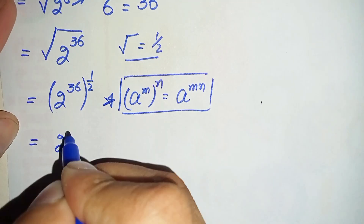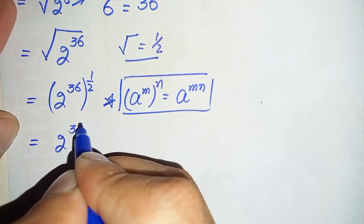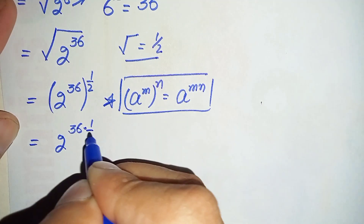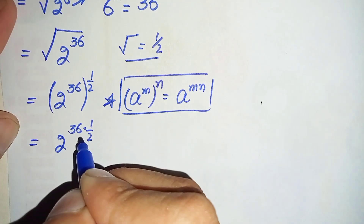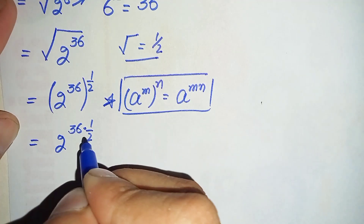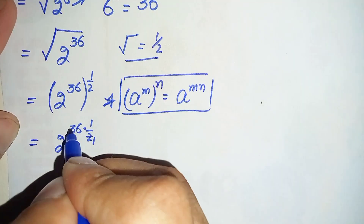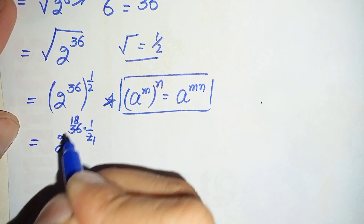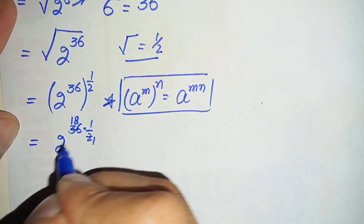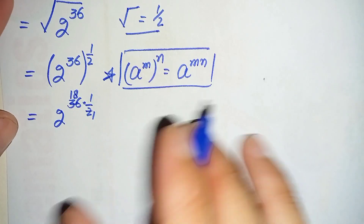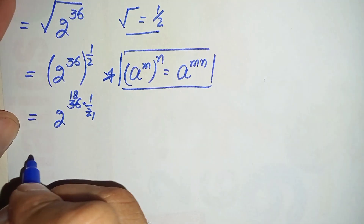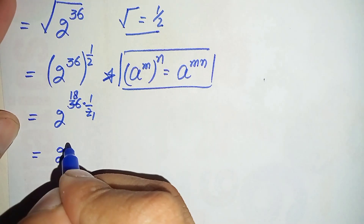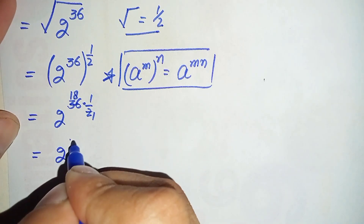This becomes 2 raised to power 36 times 1/2. We simplify: 36 divided by 2 is 18, so this becomes 2 raised to power 18. We can write 18 as 9 plus 9.